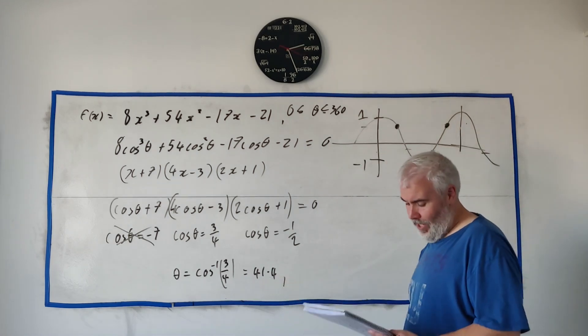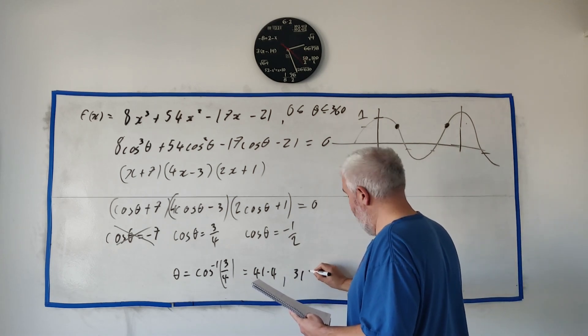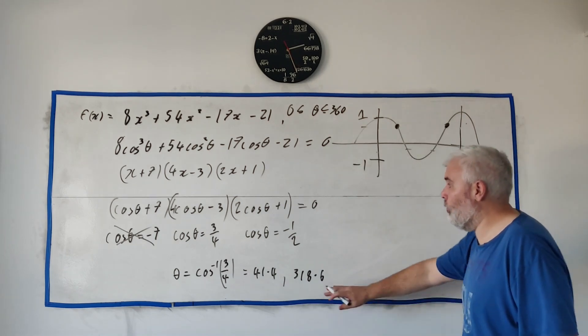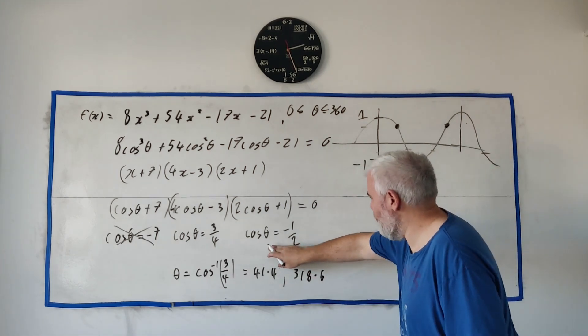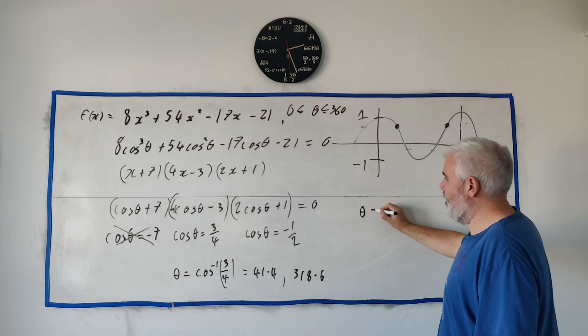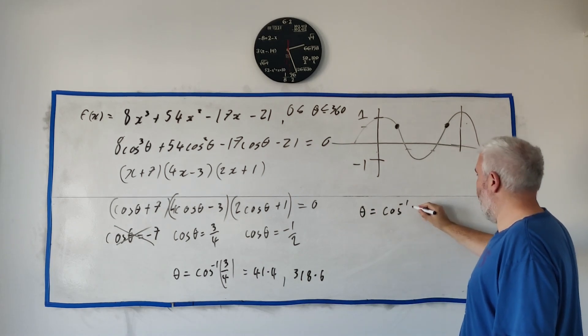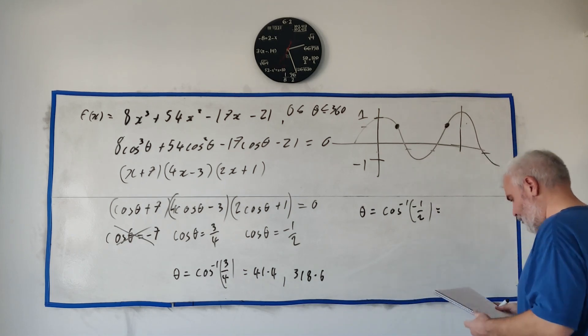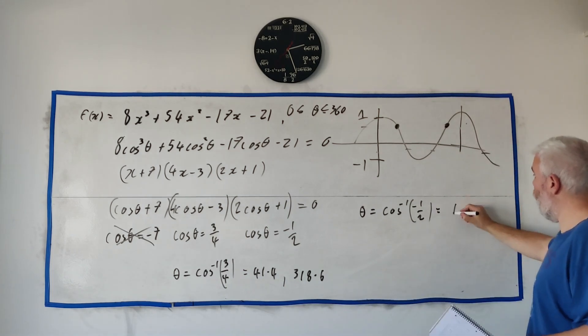But remember that only tells us this answer here. Calculator only tells us this area and we still want this one so if that was 41.4 away from zero it must be 41.4 less than 360. So 360 minus 41.4 is 318.6. That's another perfectly good answer.